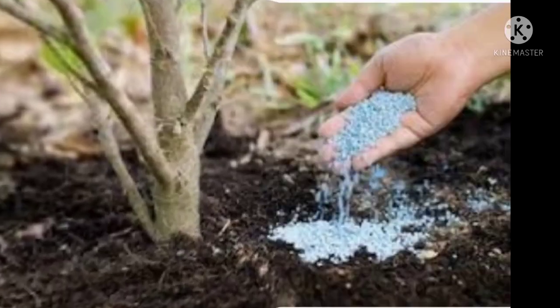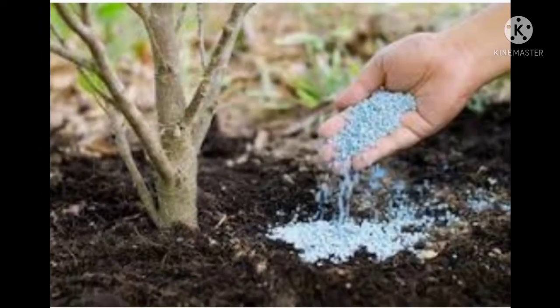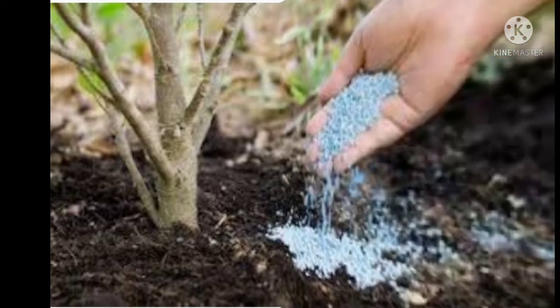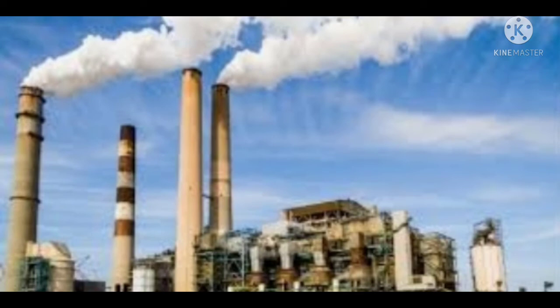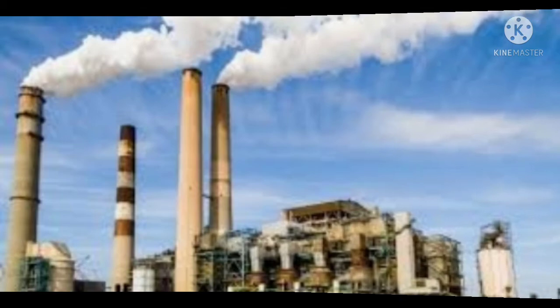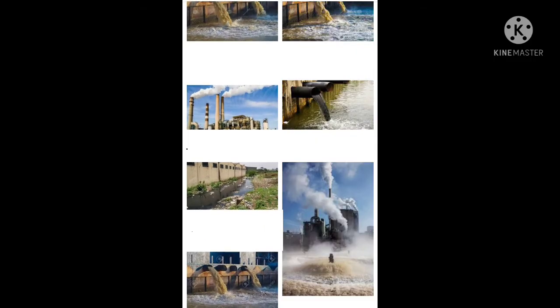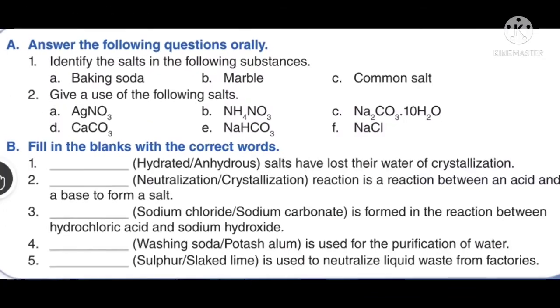Properties of salt include melting and boiling point, solubility in water, and water of crystallization. Salts that have lost their water of crystallization are called anhydrous salts. Salts are generally found in crystals with water molecules present in them; this water is called water of crystallization, and such salts are called hydrated salts.